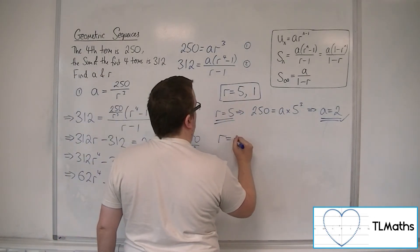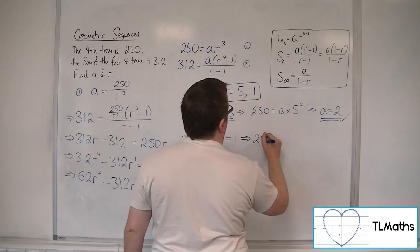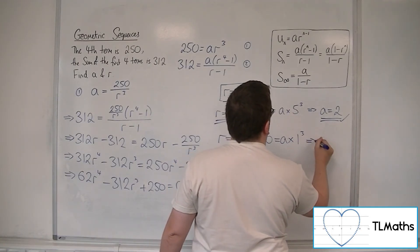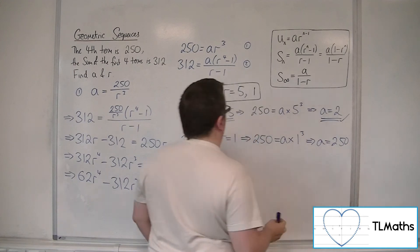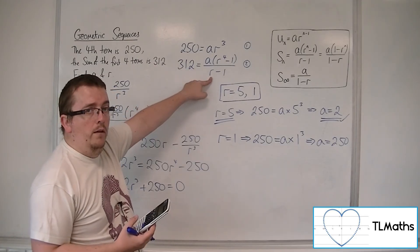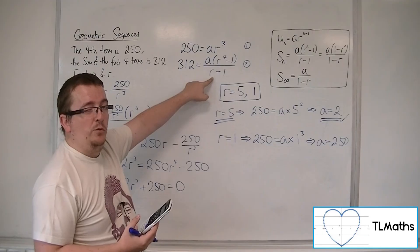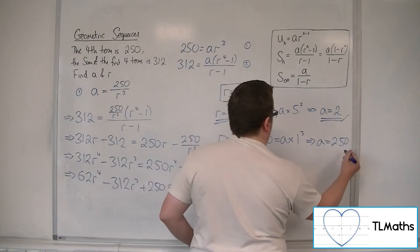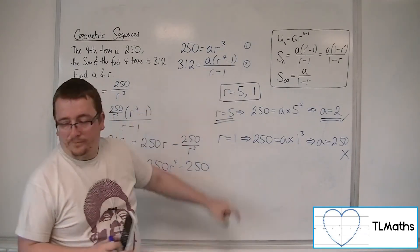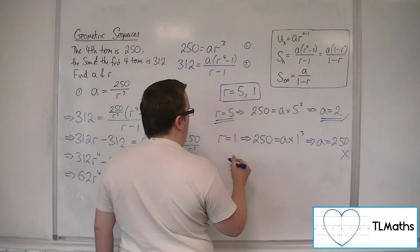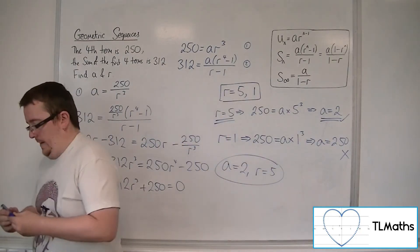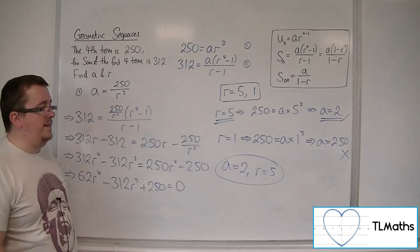If we try R equals 1, then we get 250 equal to A times 1 cubed, so A would have to be 250. But looking at equation 2, when R equals 1 the denominator (R minus 1) becomes 0, so the formula is undefined. Therefore R equals 1 is not a valid solution. That means A equals 2 and R equals 5 is the only valid solution.